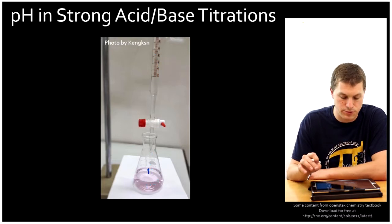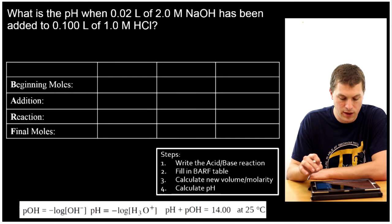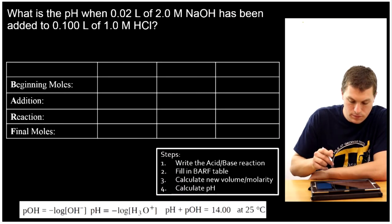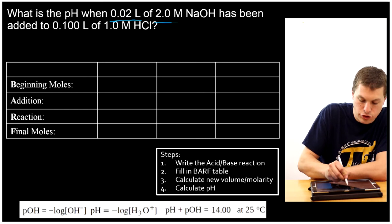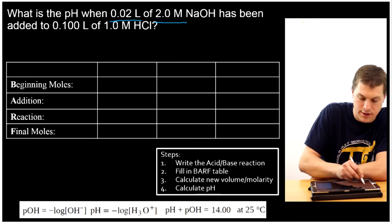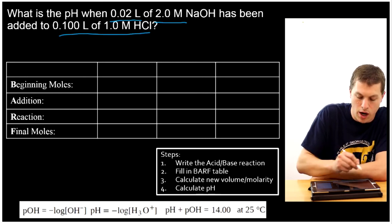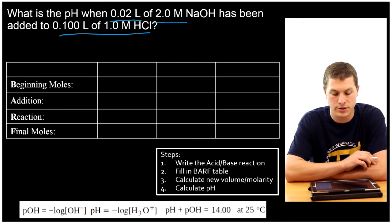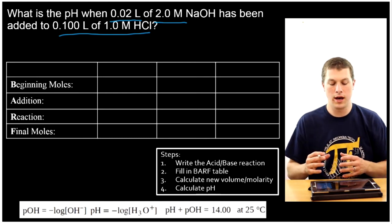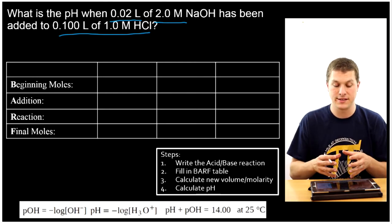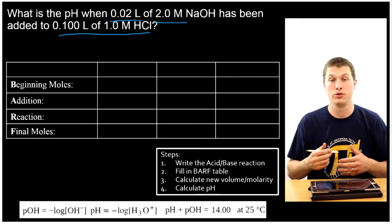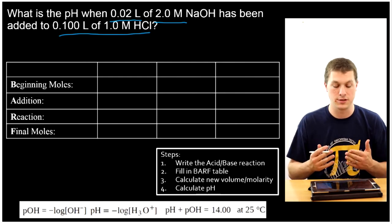The first pH we're going to calculate is when we've added 0.02 liters of 2 molar sodium hydroxide to our 0.1 liters of 1 molar hydrochloric acid. We have 1 molar hydrochloric acid down in our flask, and we've added just a little bit of sodium hydroxide to it, and we want to know what the pH is.